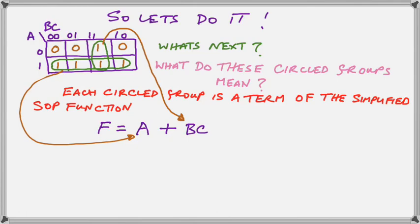The more squares there are in a group, the fewer letters there are going to be in the term. A two-square group drops one letter, and a four-square group drops two letters. Since the function has three letters, you can see that the four-square group, after dropping two letters, is only going to be one letter.